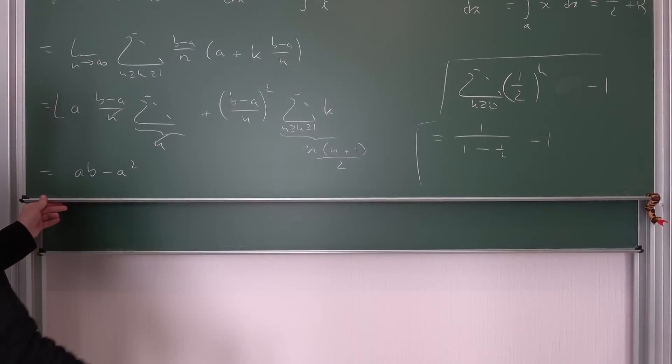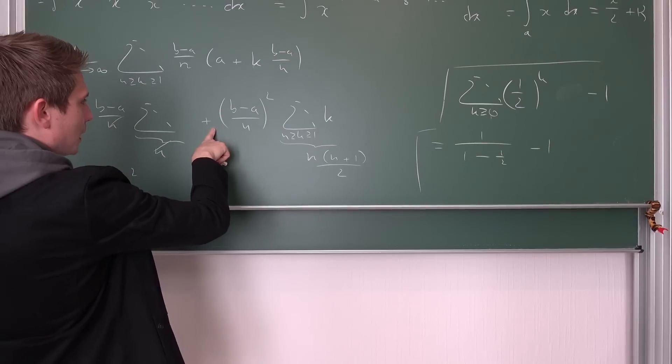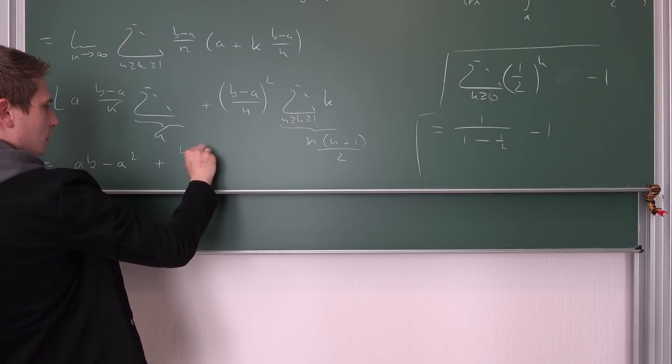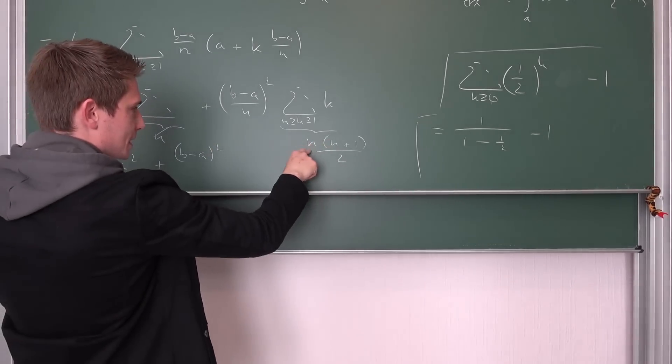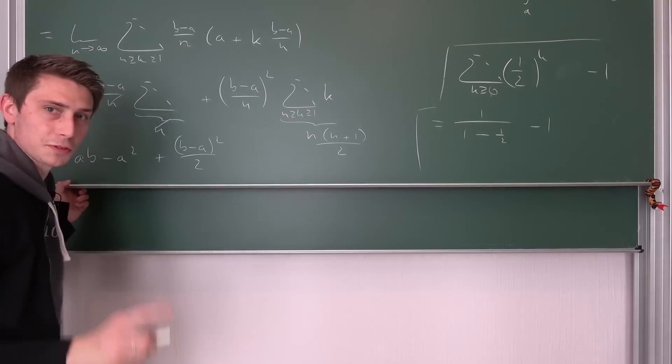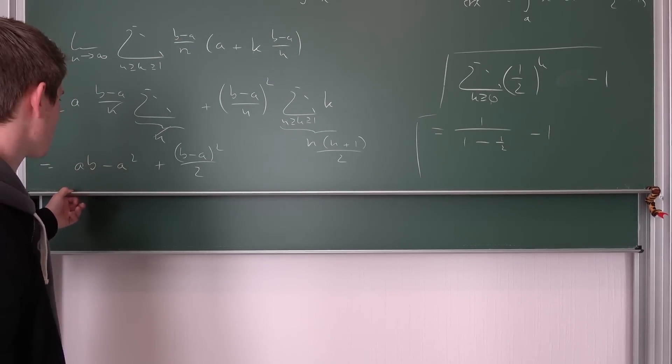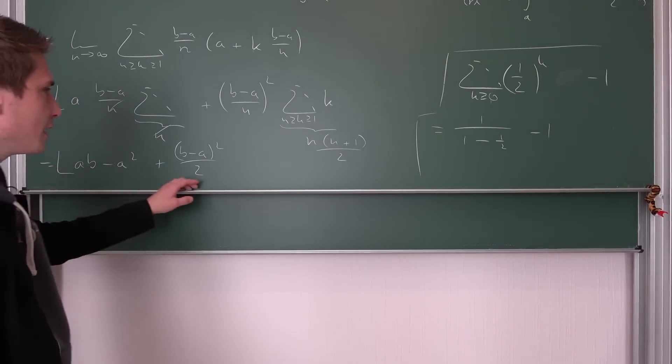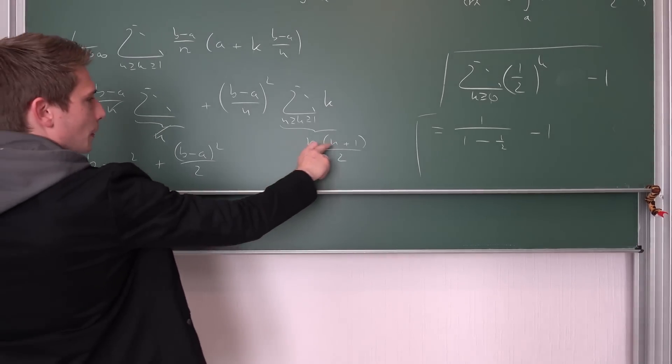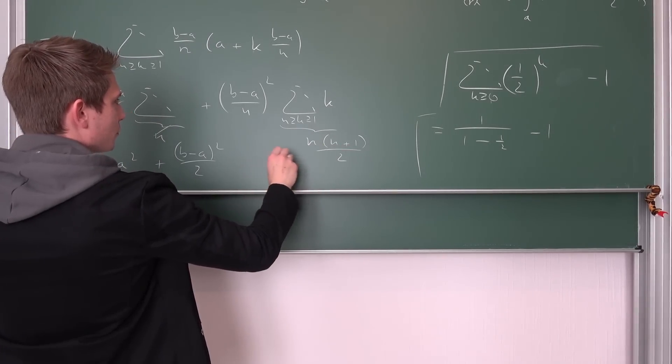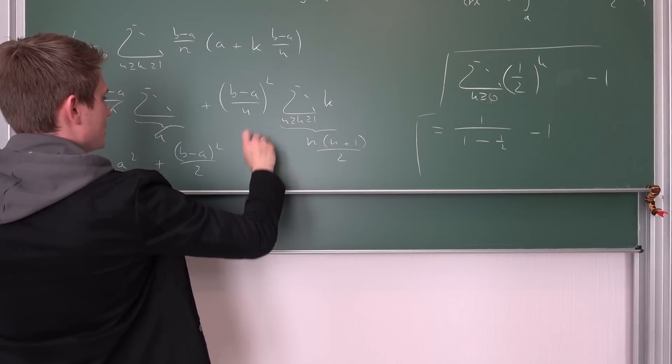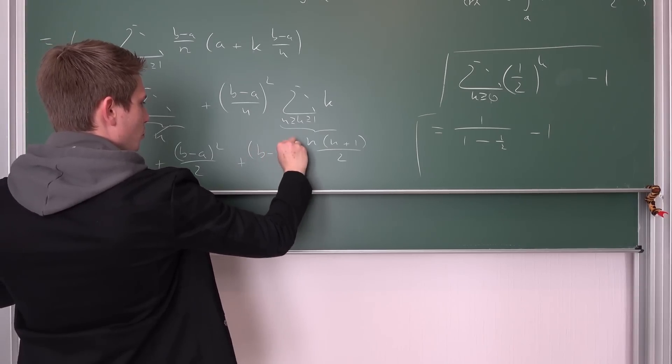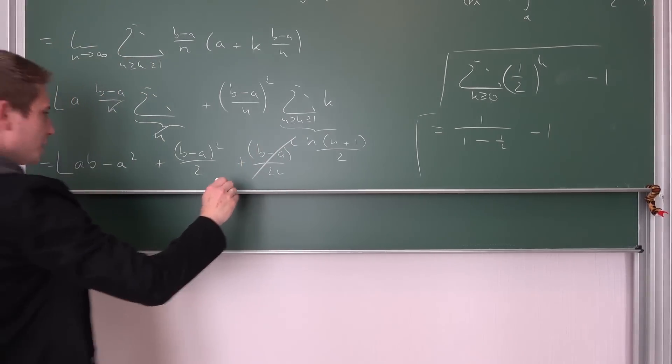We're going to sum n times one up. This is nothing but n. This and that is going to cancel out. So this first part is going to give us a times b minus a squared. I hope you can see where this came from. And then we're going to have the second summation, which is plus b minus a over n. We have this squared, k is bounded between one and n yet again. Why am I using k? I should use i. I don't know why I used k here. Let's just say k. I'm terribly sorry for that. There's probably an annotation somewhere in the video. This thing is just little Gauss, so this gives us n times n plus one over two.